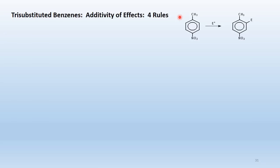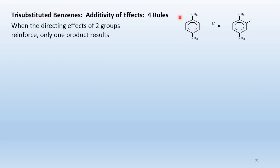Di-substituted benzenes — additivity of effects. Rule 1: when directing effects of two groups reinforce, only one product forms. Example: para-nitrotoluene — the methyl group directs ortho to itself, the nitro group directs meta to itself; both point to the same position, no conflict, so only one product results.